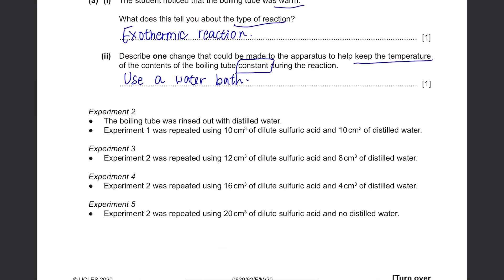Experiment 2. The boiling tube was rinsed out with distilled water. Experiment 1 was repeated using 10 cm cubed of dilute sulfuric acid and 10 cm cubed of distilled water. They changed the volumes of dilute sulfuric acid and distilled water. Next it was 12 and 8, then 16, 4 and 20 and no distilled water. The rest are the same.